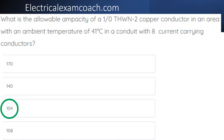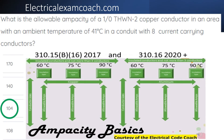The first thing we're going to do is head to our primary ampacity table. We're going to see if our insulation type is listed in the 90 degrees C column. If it is, then we're going to choose our starting ampacity from the 90 degrees C column.